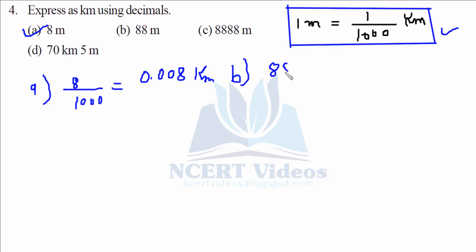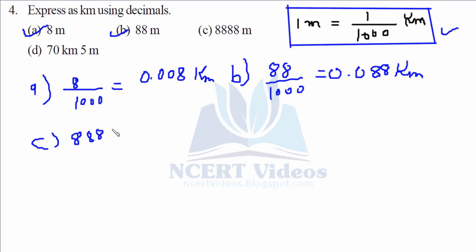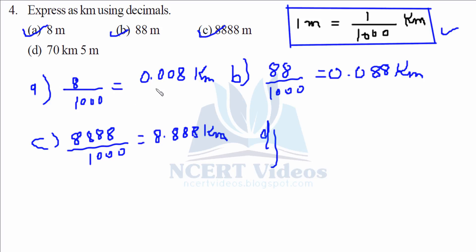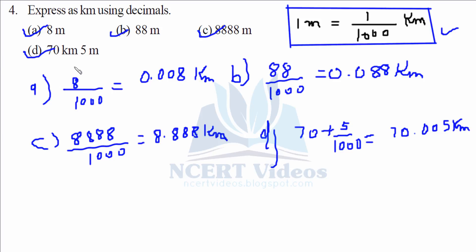For part b, 88 over 1000 gives you 0.088 kilometers. For part c, 8888 over 1000 gives you 8.888 kilometers. For part d, 70 kilometers and 5 meters — we will not disturb 70, only 5 has to be converted into kilometers. 5 over 1000 gives you 70.005 kilometers. That completes question number four.